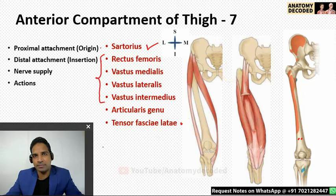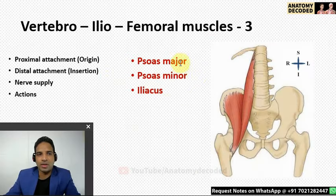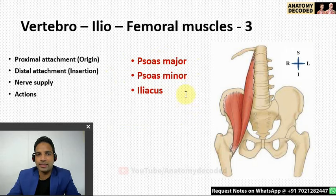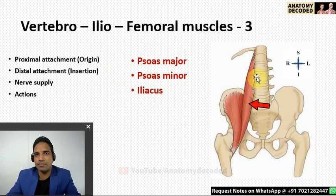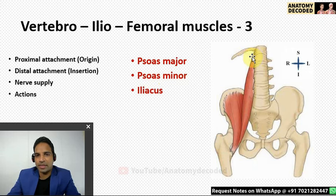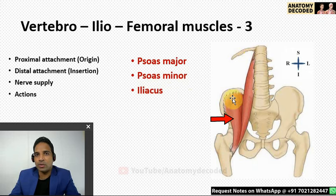There is a small group called the vertebro-iliofemoral muscles, comprising three muscles: psoas major, psoas minor, and iliacus. Psoas major arises from the transverse processes of the five lumbar vertebrae, the anterior aspect of those processes, and the intervertebral discs between the vertebrae. Psoas minor is rarely present — in only about fifty percent of individuals — and if present arises from the intervertebral disc between T12 and L1.